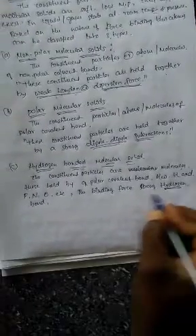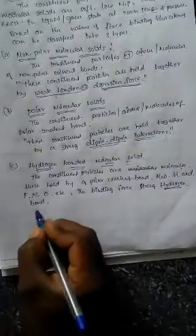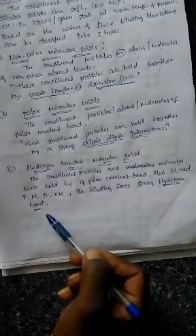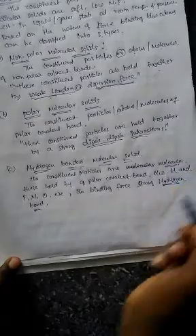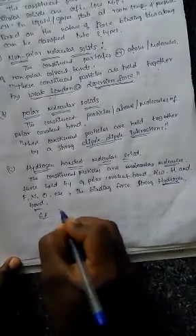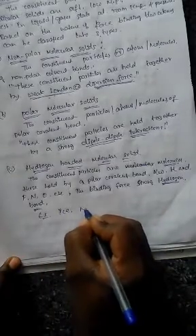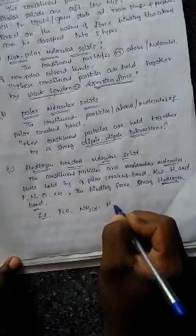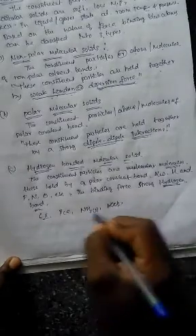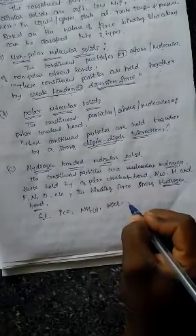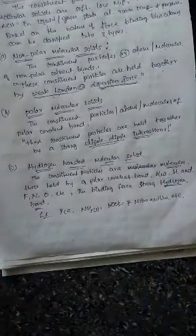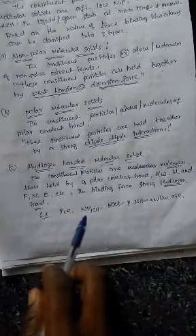The binding force in hydrogen-bonded molecular solids is the hydrogen bonding force. Examples include ice (water), solid ammonia (NH₃), and similar compounds. For example, in water there is a lone pair on oxygen, and a hydrogen bond is present between hydrogen and oxygen of adjacent molecules. Such solids are called hydrogen-bonded molecular solids.